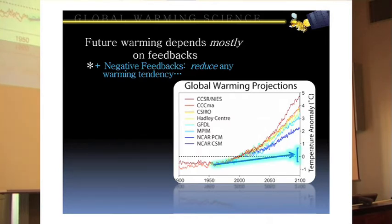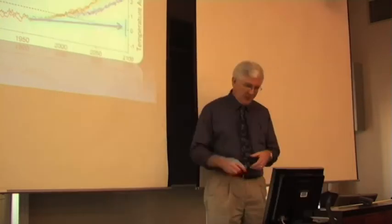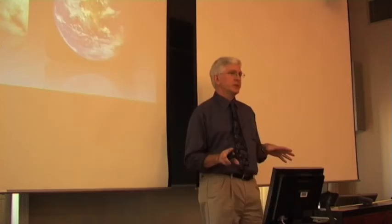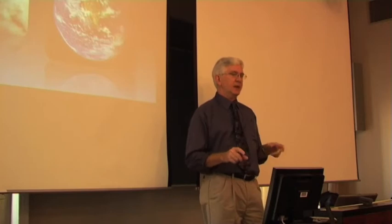So if there were negative feedbacks, it could actually minimize the warming. All of the models are predicting positive feedbacks. But does nature really work this way? This is what I spend most of my time working on, is trying to figure out from satellite measurements of the Earth, how does nature work?